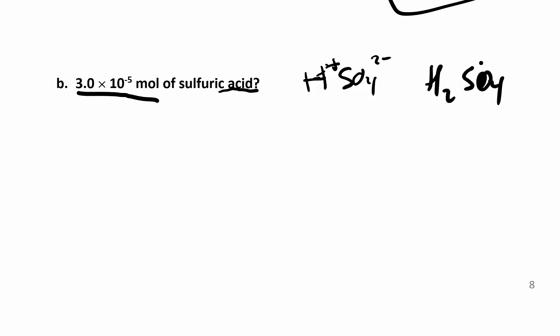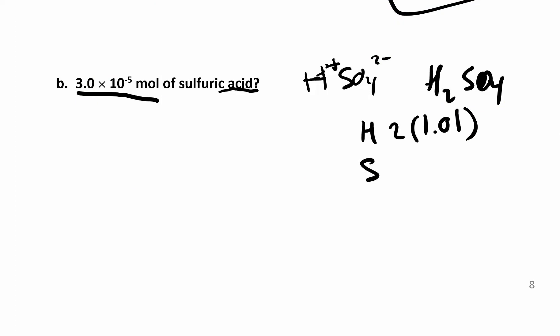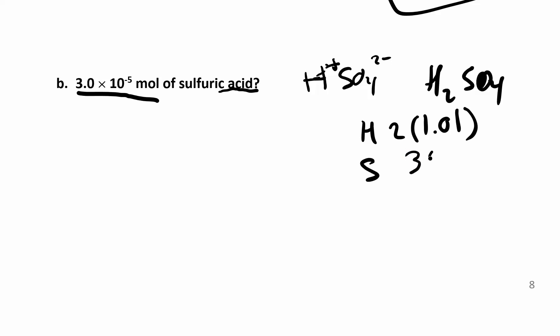H2SO4 is your molecule that you have to figure out the molar mass for. We have hydrogen, we have two hydrogens. Sulfur, you have 32.06, you only have one of them. And you have four oxygens, 16. So when you work all that out, you get 98.08.